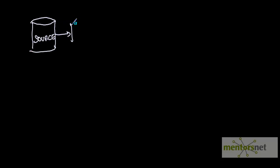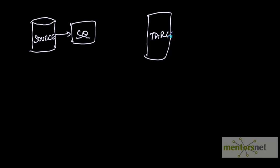Basically, you will normally have a requirement where you have a source and you do not want to take all the records from the source to the target. You want to filter some of the records going from source to target. Suppose 100 records are going and based on some criteria you want to send less than 100 into the target. How do you do that?